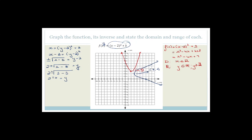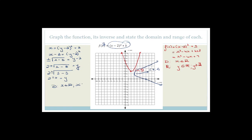The domain and range of the inverse is the swapping of the original. The domain is from x equals 3 across, so x is an element of real values for x greater than or equal to 3. The range is y is an element of real values — all real values, corresponding to what the original domain was.